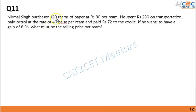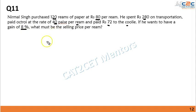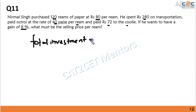Nirmal Singh purchases 125 rims at rupees 80 per rim. He spends 280 rupees on transportation, pays octroi at the rate of 40 paisa per rim, and paid 72 rupees to the coolie. He wants a gain of 8%. What must be the selling price per rim? Let us calculate the total investment.